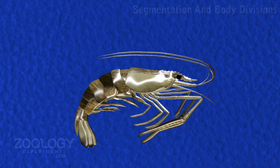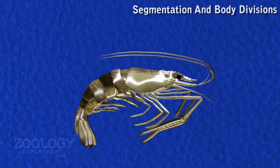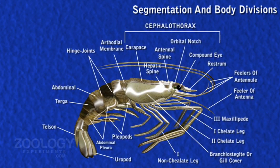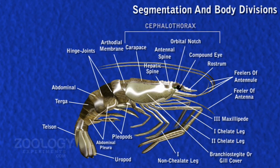Segmentation: The adult prawn is clearly divided into nineteen segments, also called somites. The segments are arranged into two main regions: cephalothorax and abdomen. The cephalothorax consists of thirteen segments; it is large, rigid, unjointed, and more or less cylindrical in shape, with joints between segments obliterated. It has two parts — head and thorax — with the head consisting of five segments and the thorax comprising eight segments.